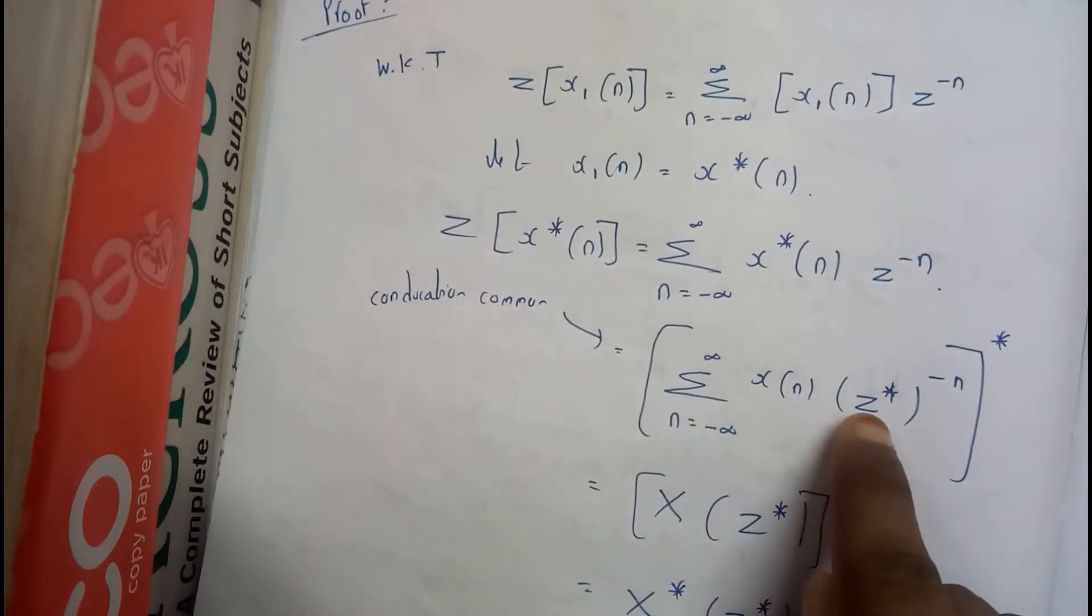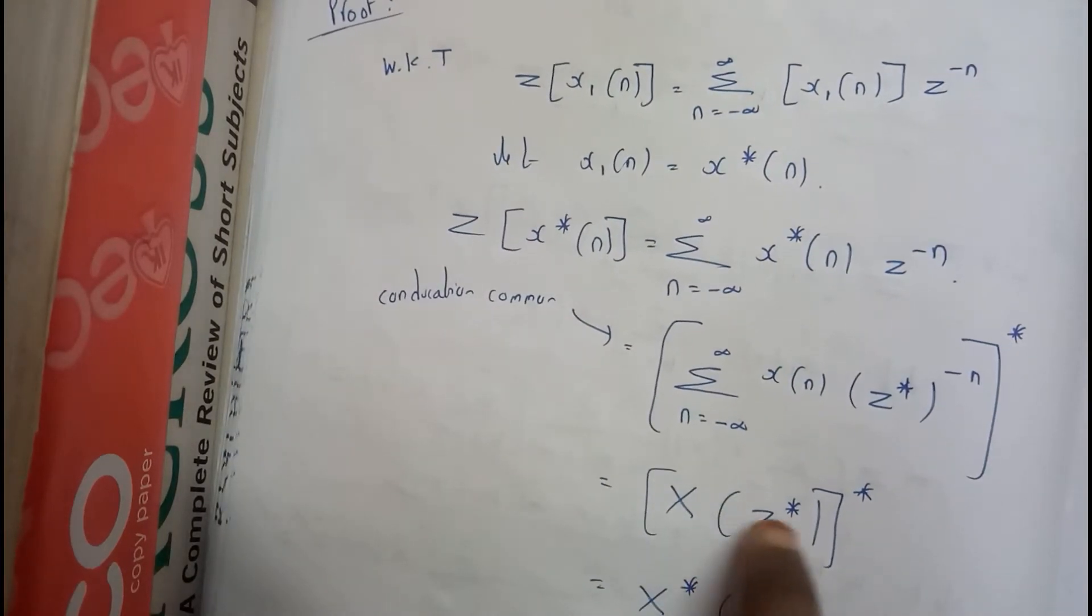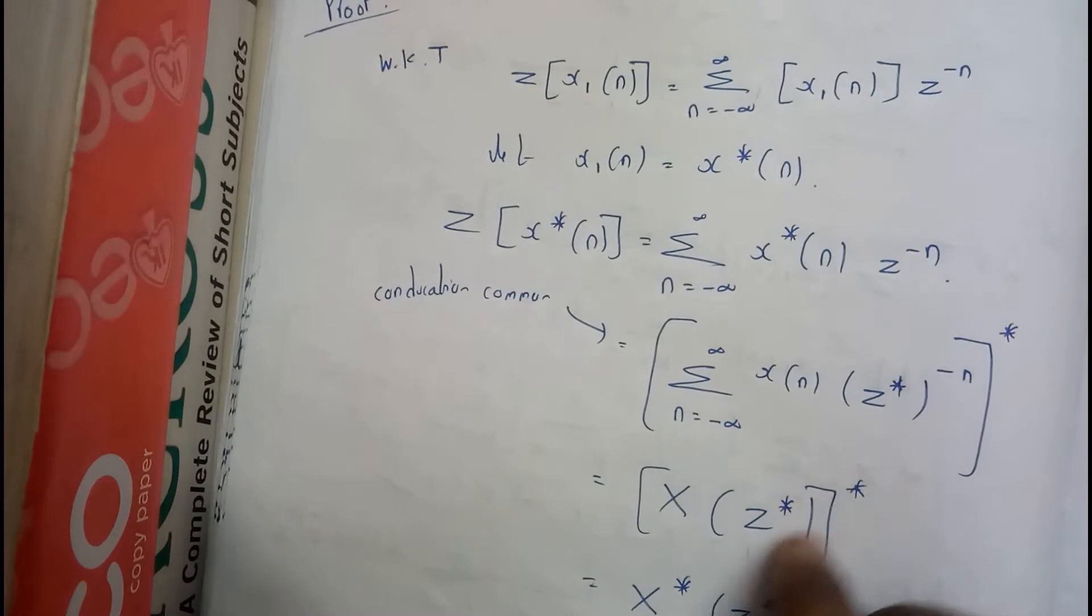So this whole part is in terms of z conjugate. So it becomes x of z conjugate whole to the power of conjugate.